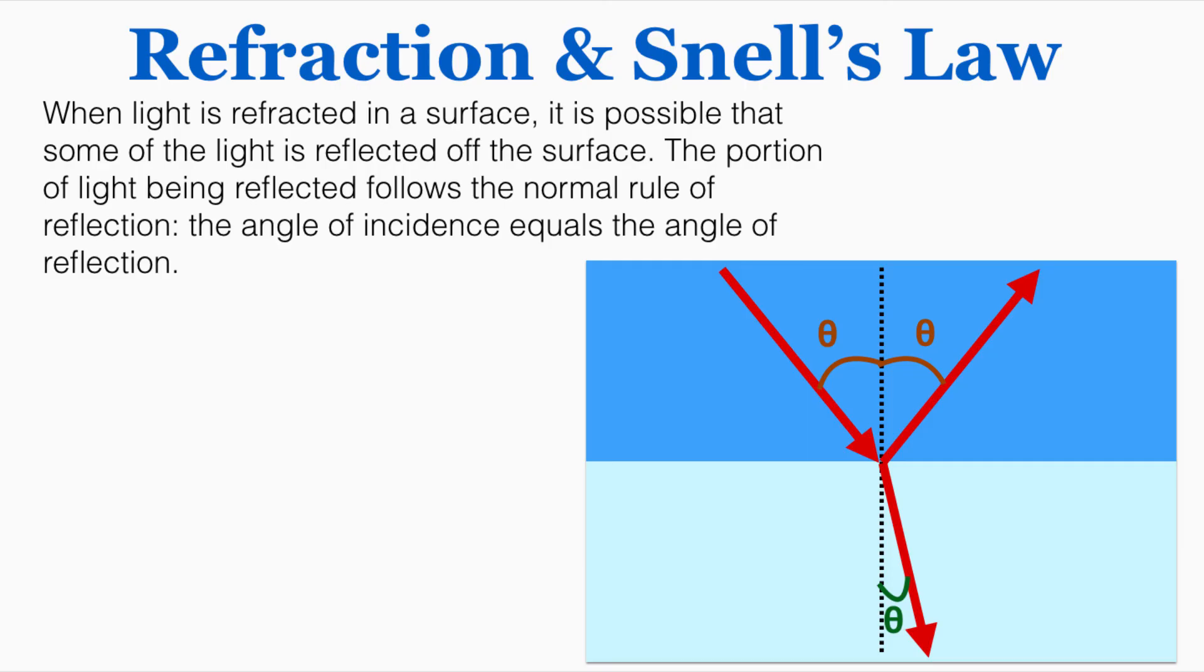When light is refracted in a surface it is possible that some of the light is reflected off of the surface as well. The portion of light being reflected follows the normal rule of reflection. The angle of incidence equals the angle of reflection. So if you ever see a problem asking what each of these beams of light will do, you know that the reflected light will bounce off with the same angle as the original, and for the refracted light you'll need to use Snell's law to find that missing angle. And that's what you need to know about refraction and Snell's law.